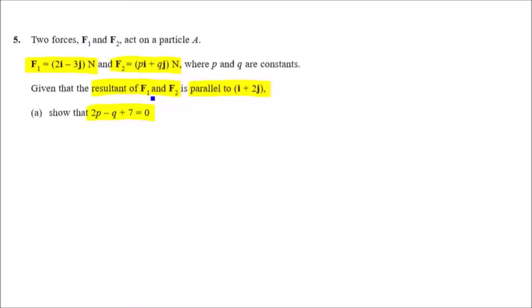Add up the vectors. Let's just call it F to make it easy. We can say now that 2i minus 3j plus pi plus qj.